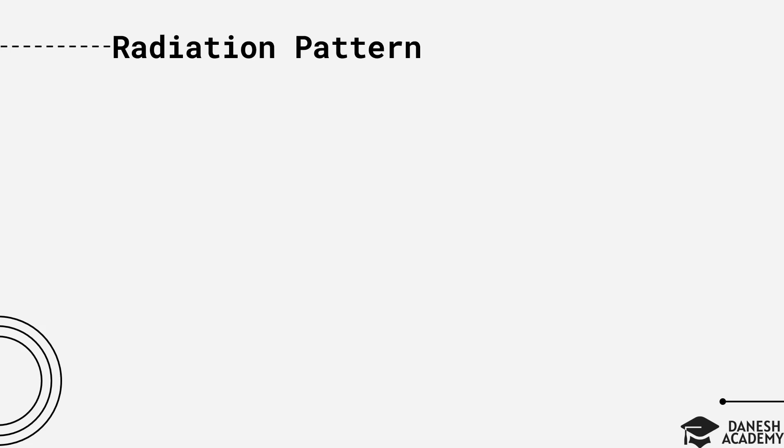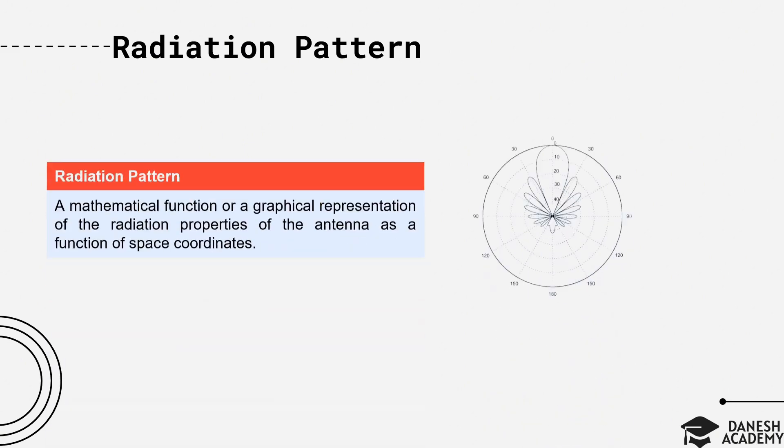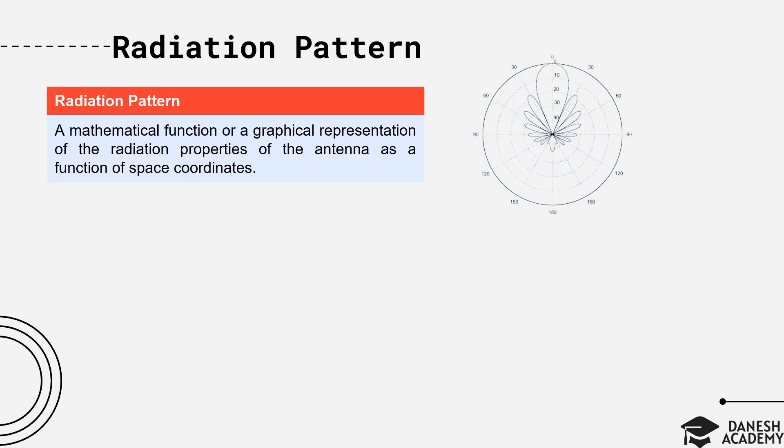Let's now describe some key parameters of an antenna starting with radiation pattern. Most of the definitions provided here are from IEEE standard definitions of terms for antennas. An antenna radiation pattern or antenna pattern is defined as a mathematical function or a geographical representation of the radiation properties of an antenna as a function of space coordinates.